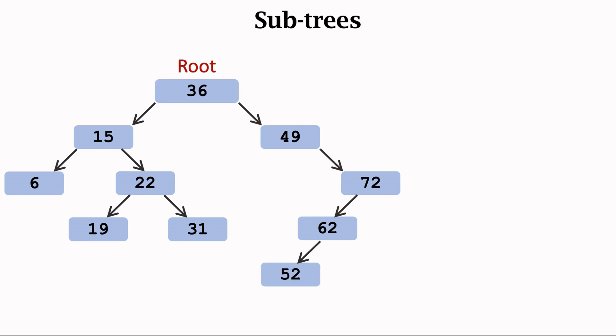The last concept, subtrees. The root has two subtrees. This is the left subtree. This is the right subtree. You can understand subtrees in this way.